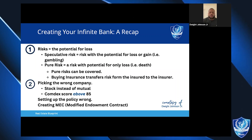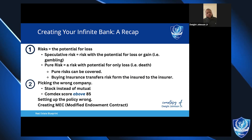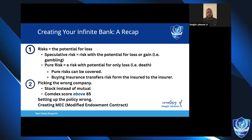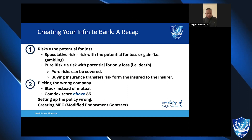Another thing you can do wrong is setting up the policy wrong. There are plenty of stories of people who got a policy and it wasn't what they thought — they wanted to do infinite banking and there was no cash value. One big thing is the seven pay rule: you cannot pay the policy in full in the first seven years. If you do, it becomes a MEC — a modified endowment contract — and you lose the tax advantages of tax-free growth and tax-free withdrawals. Everything then gets taxed as capital gains, so you want to avoid that at all costs.